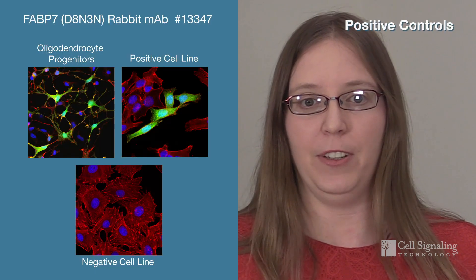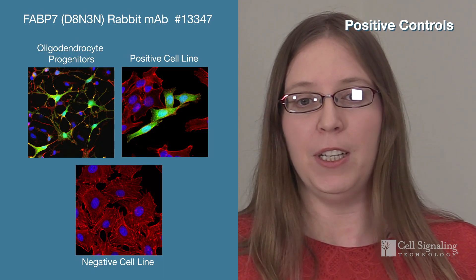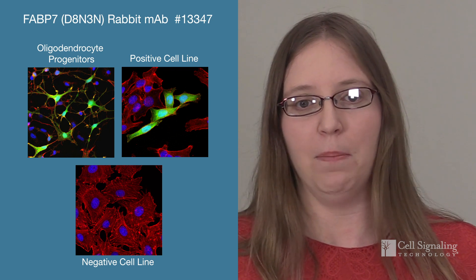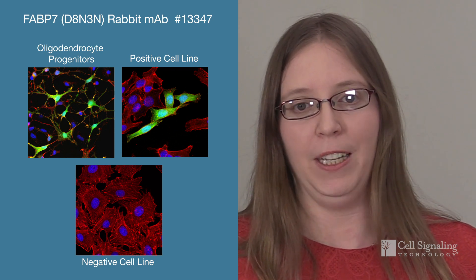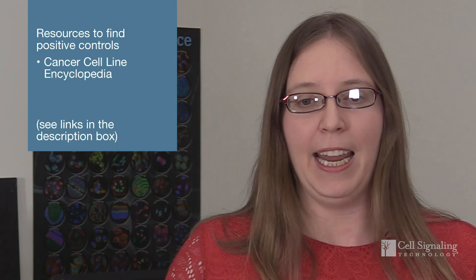When starting a set of IF experiments, it's a good idea to include positive controls, which can give you an idea of what your protein of interest should look like in a cell type known to be positive for the target protein. Check resources like the Cancer Cell Line Encyclopedia, BioGPS, or published literature to find known positives.